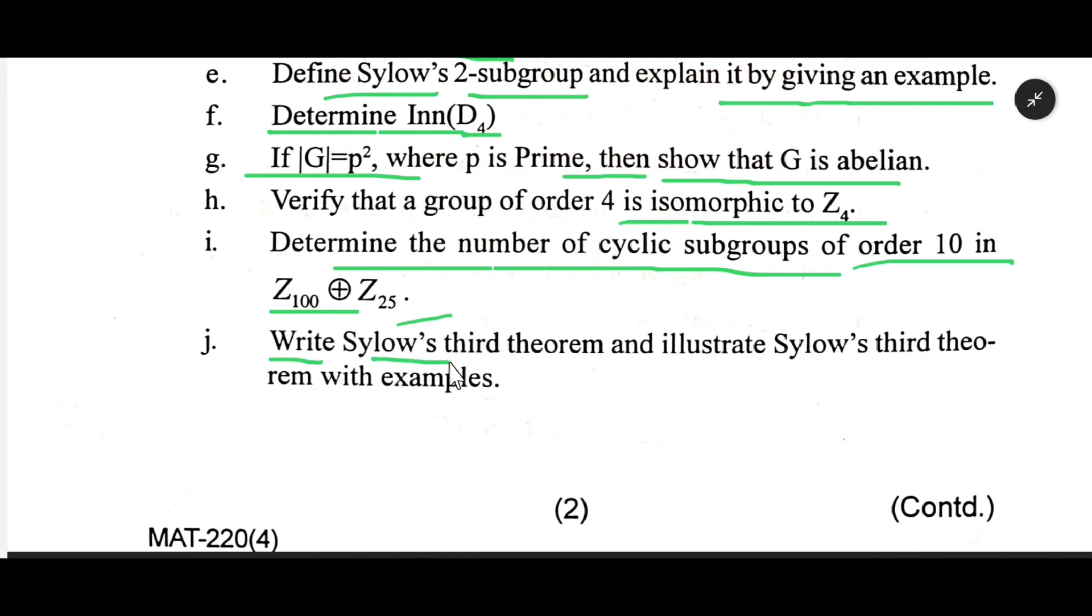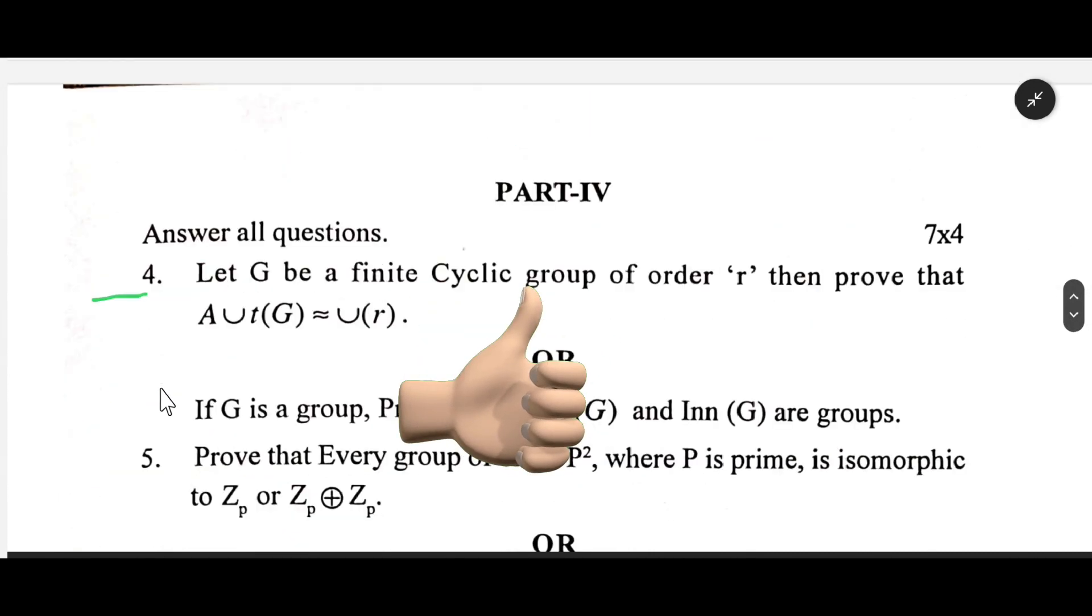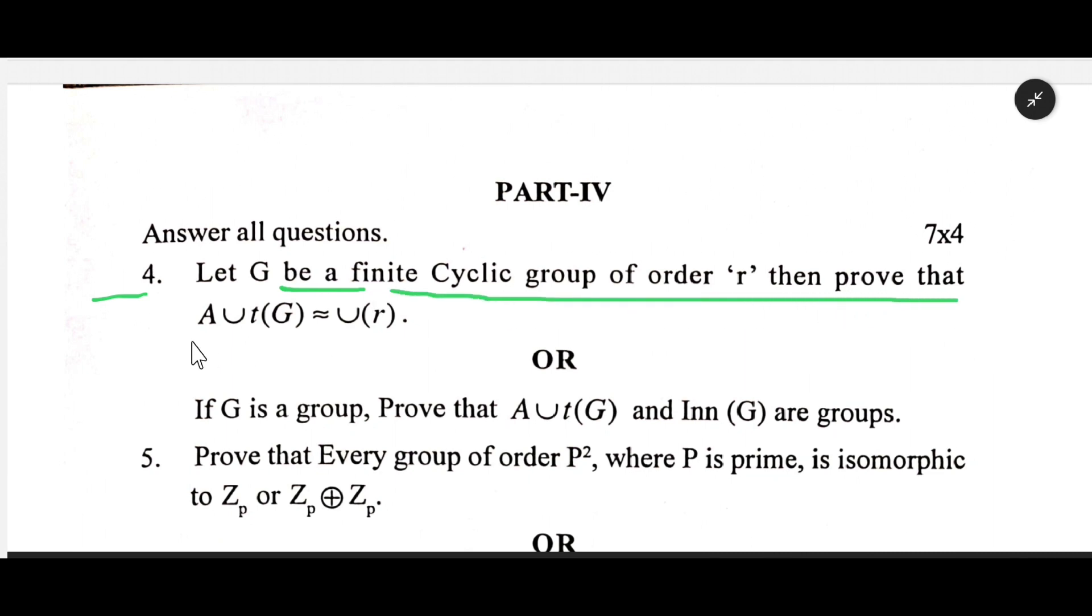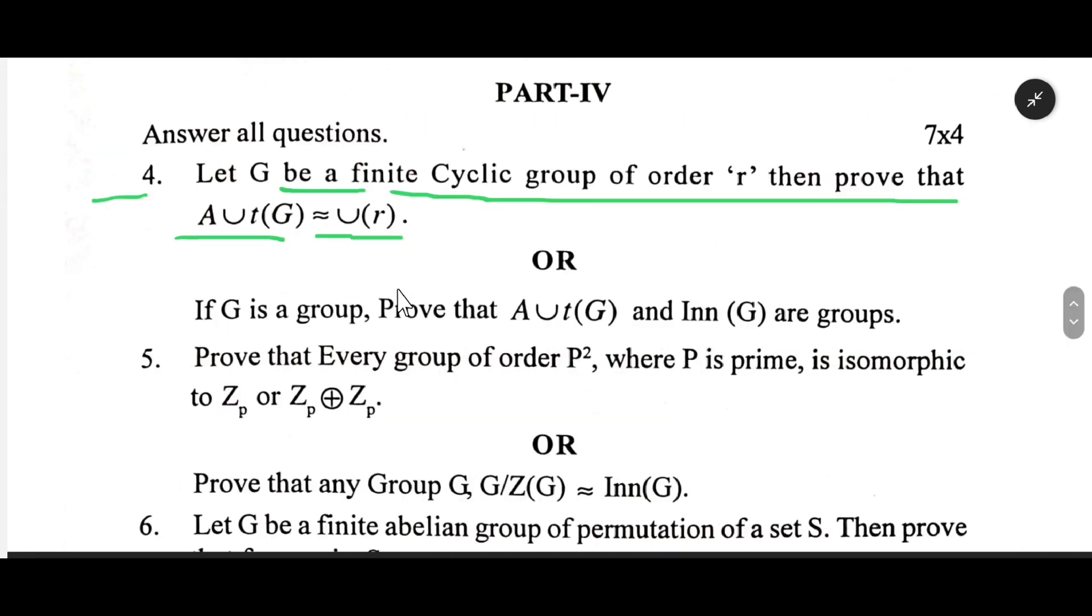Write Sylow's third theorem and illustrate Sylow's third theorem with example. Number 4: Let G be a finite cyclic group of order R, then prove that Aut(G) ≅ U(R). If G is a group...